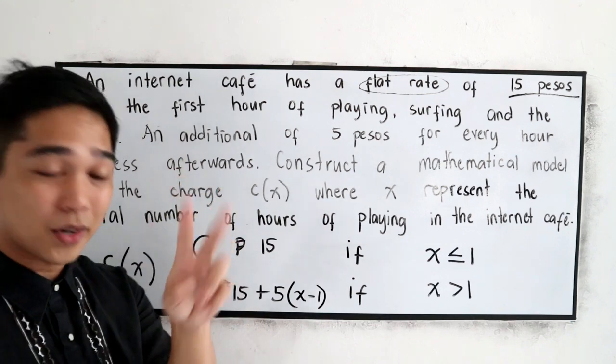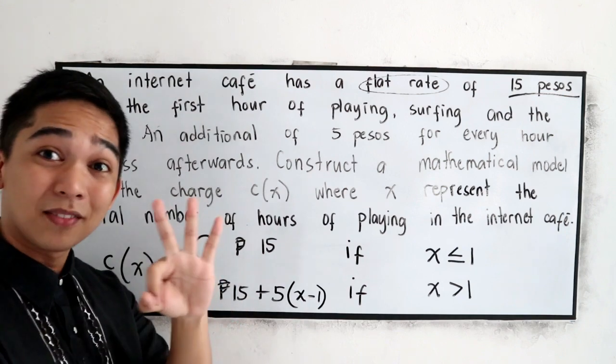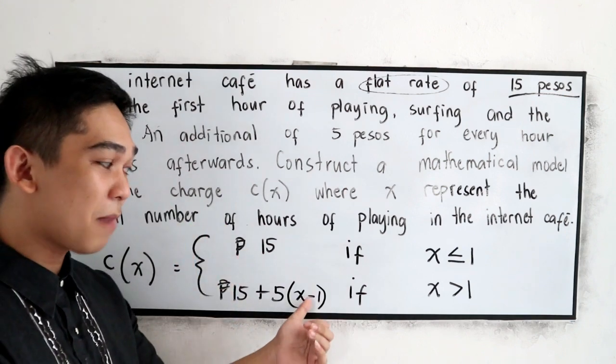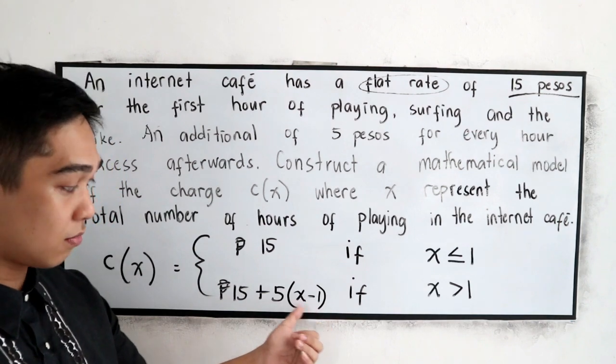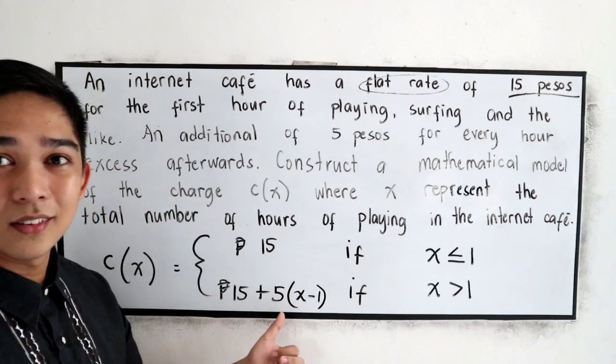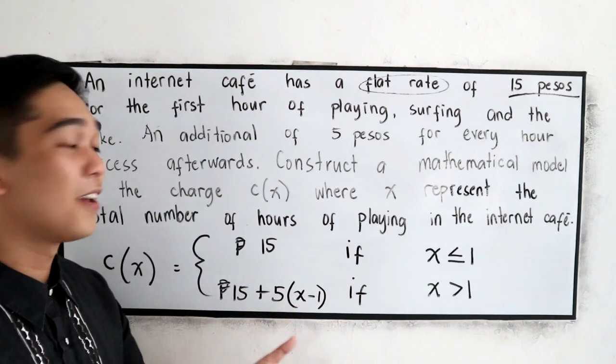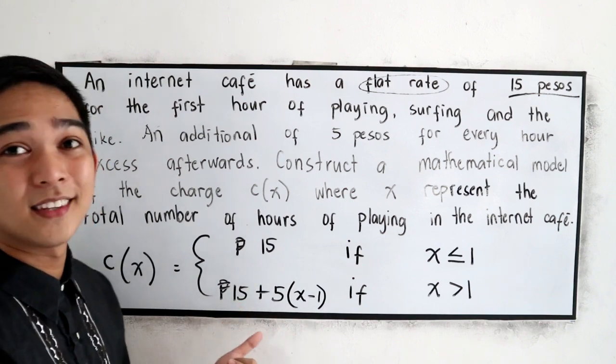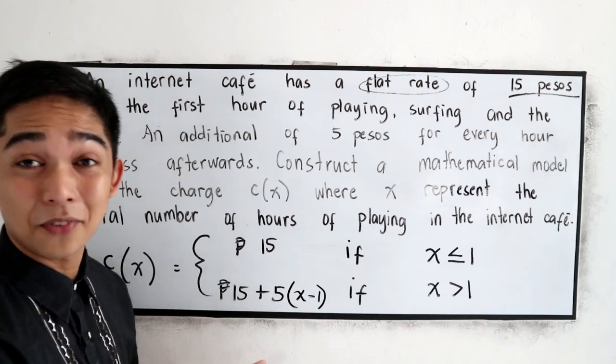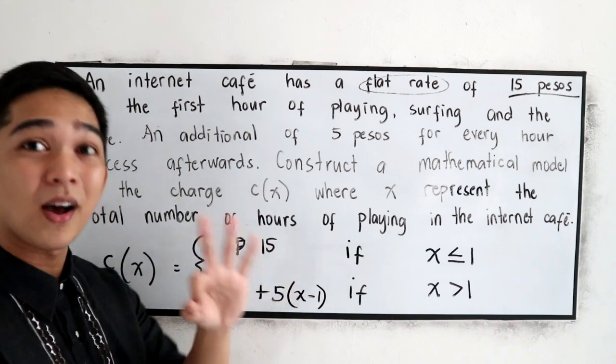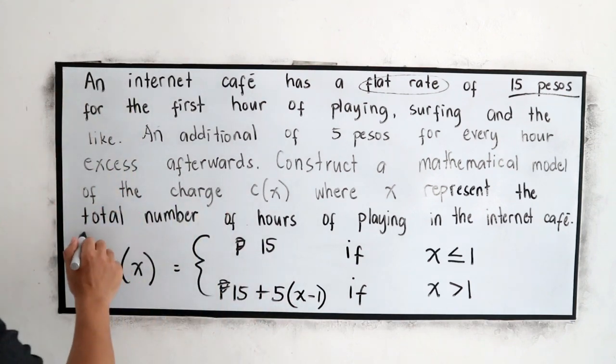5 plus 15, so in 2 hours, 20 pesos, tama sya. Kapag 3 hours naman, 3 minus 1 that is 2 times 5, that is 10 plus 15, that is 25.